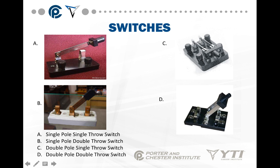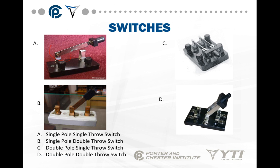If you notice here where my cursor is, I'll put a circle up here — that is your pole. So we have one pole on both A and B. The difference is the number of receiving ends. In other words, it can only go one way to make a contact, so it's single throw. Down here in diagram B, we still have only one pole — it can only make one contact at one time.